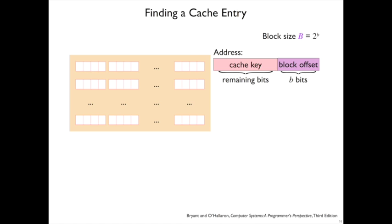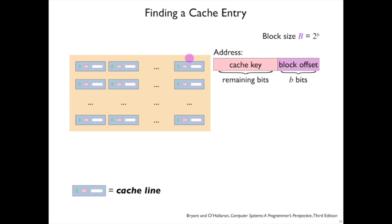So we can think of those remaining bits as a key that will be used to look up these blocks, and that means these blocks need to be not just the data, but the data paired with the key. In general, we also have this green box which is a valid bit that says whether this key is actually set or not.